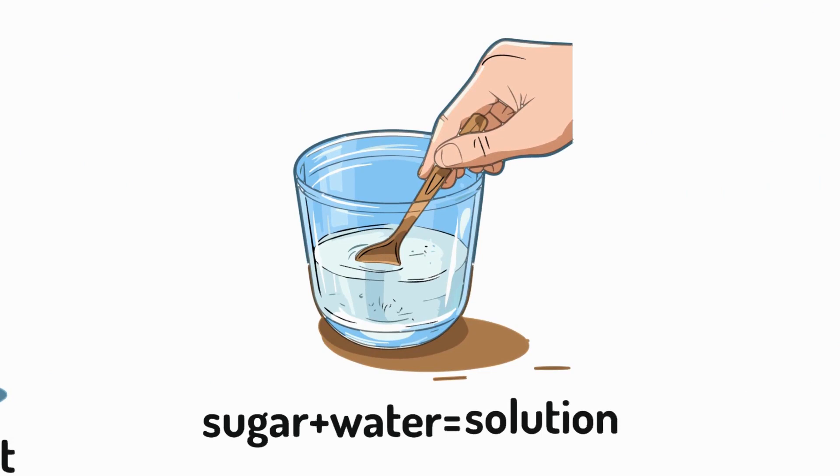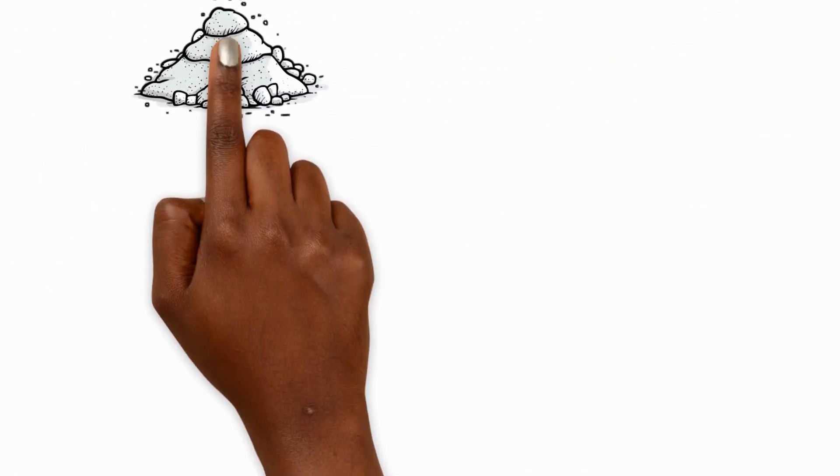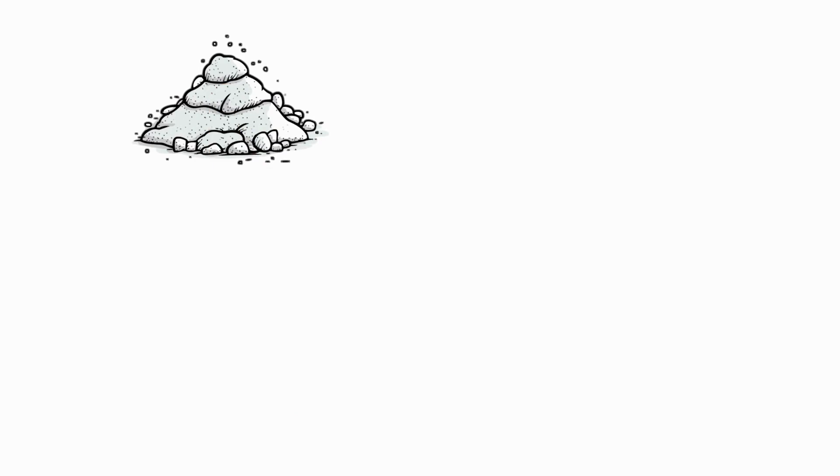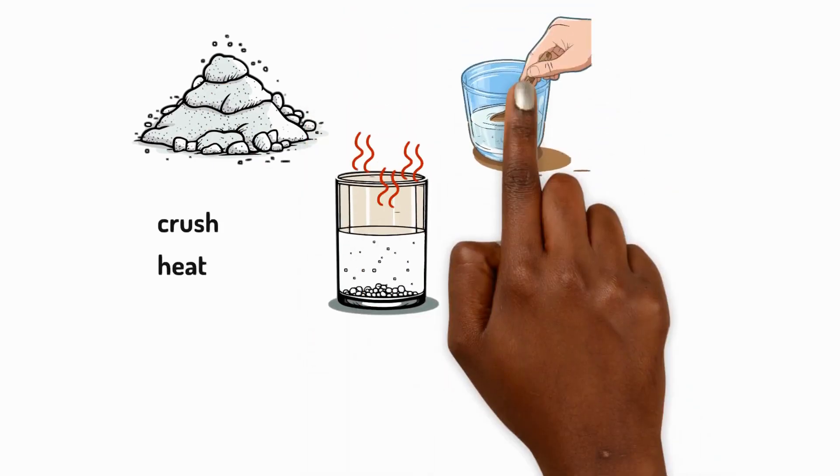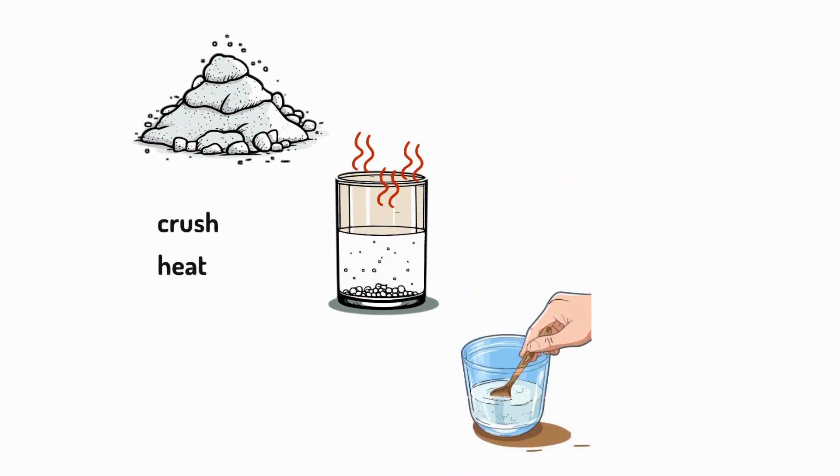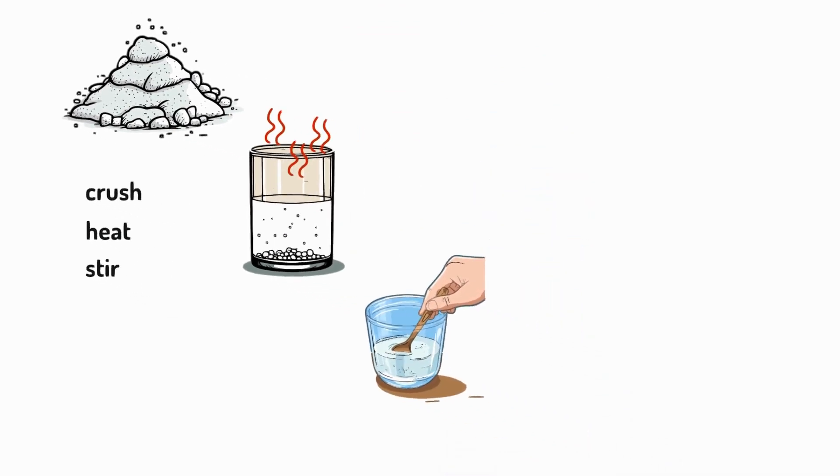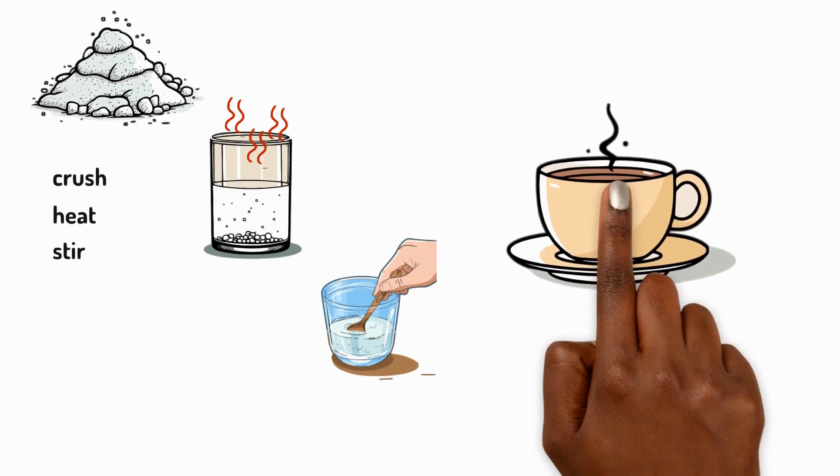Sometimes we want to dissolve solutes faster. There are three main ways to do this. Firstly, we can crush the solid solute. Secondly, we could heat the liquid solvent. Or thirdly, we can stir the solution, just like making a perfect cup of tea.